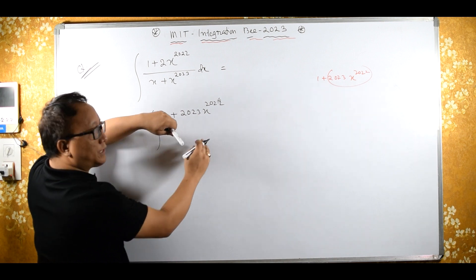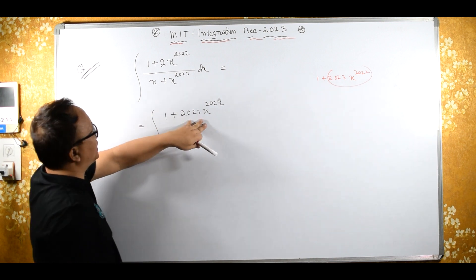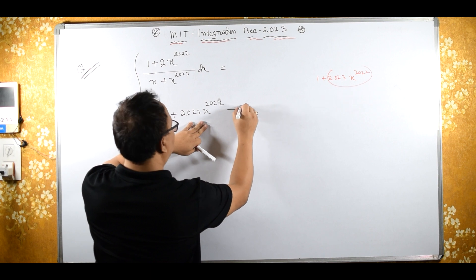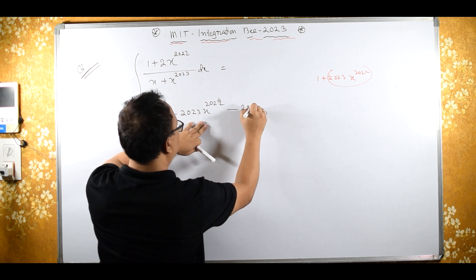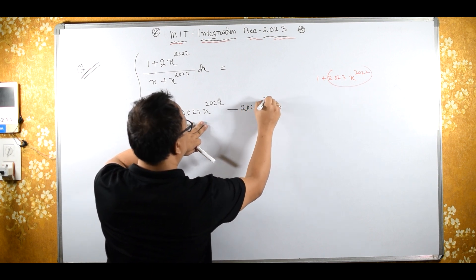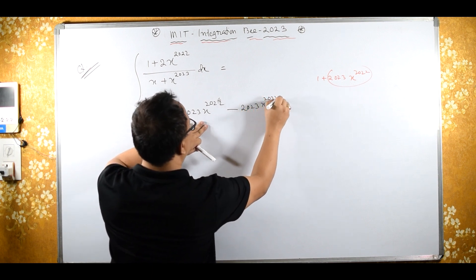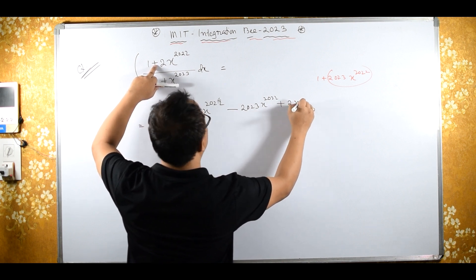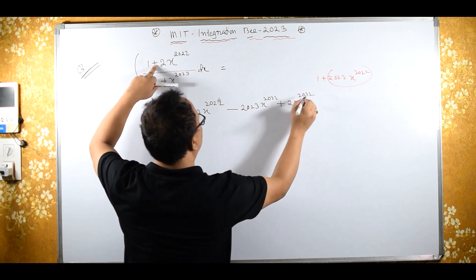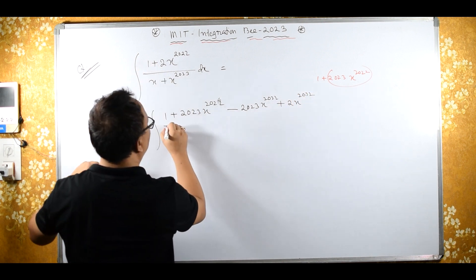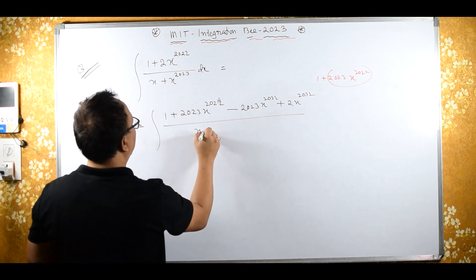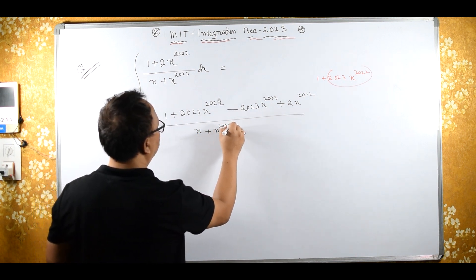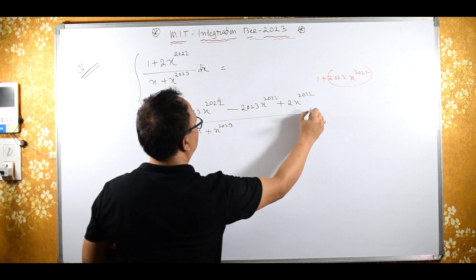Now, this is extra. This is extra. So I am cancelling with 2023 x raised to 2022, and then plus twice x raised to 2022 upon x plus x raised to 2023 dx.